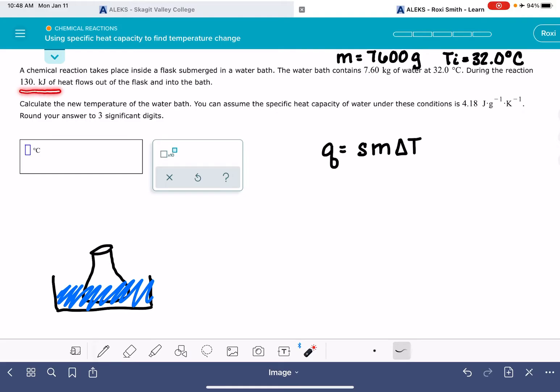Now, last but not least, it's telling us that 130 kilojoules of heat flows out of the flask and into the bath. So that's definitely going to be our Q. And remember that this Q needs to be in units of joules, not kilojoules for the QSMAT equation. So I'm just going to go ahead and also multiply this by 1,000 to get it into units of joules.